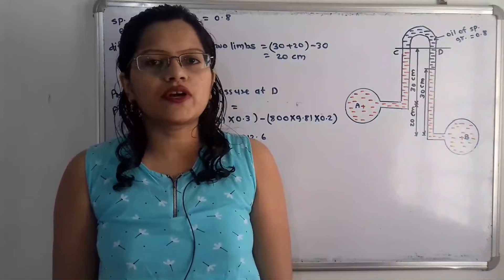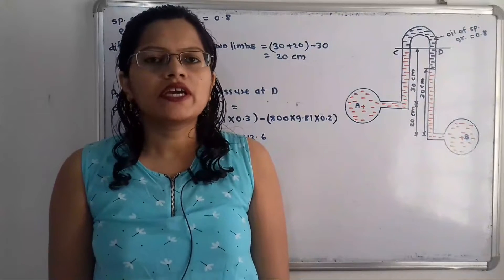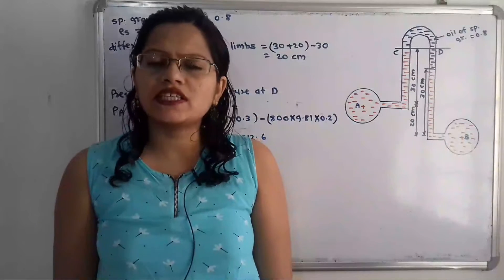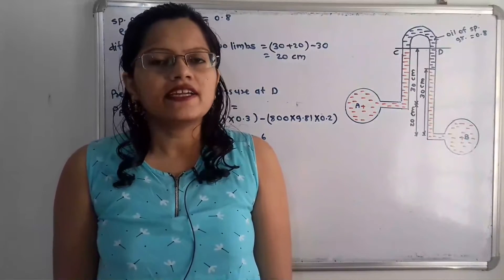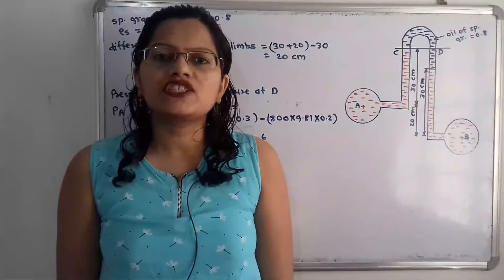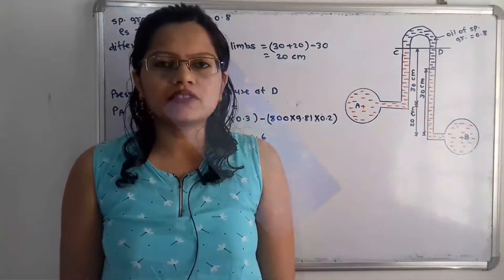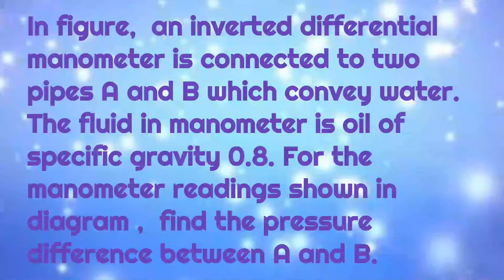Hello friends, this is Priyanka. Today we are going to solve a problem on inverted U-tube manometer. In this inverted U-tube manometer, the U-tube is getting inverted containing a light liquid and it is attached to two points whose pressure difference is to be measured. The given problem states: an inverted differential manometer is connected to two pipes A and B which convey water. The fluid in the manometer is oil of specific gravity 0.8. For the manometer reading shown in the diagram, find the pressure difference between A and B.